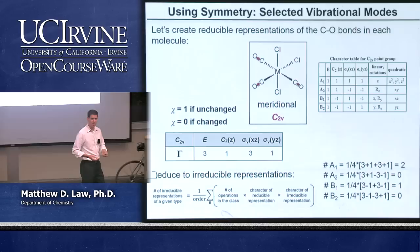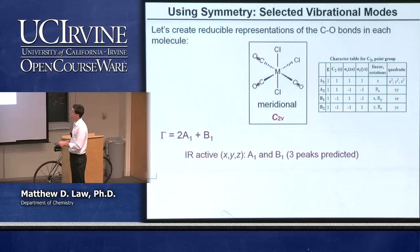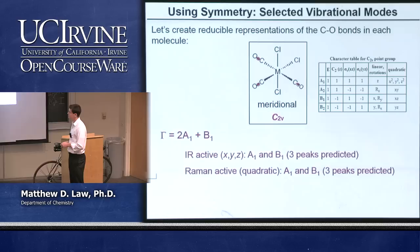Now we can assign Raman and infrared activity to these different modes. We have our two A1s and our B1. For IR activity, A1 and B1 are both infrared active, so we expect to see three peaks in this case because we have three different modes. It's the same for Raman activity — A1 and B1 are both Raman active. So the MER isomer should have three peaks in both its infrared and Raman spectra.